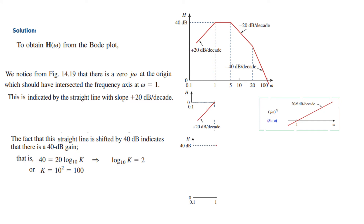The fact that the straight line is shifted up 40 dB indicates a 40 dB gain. Converting: 40 dB means 20 log(K), so log₁₀(K) = 2, giving K = 100. For this part of the transfer function, we get a gain of 100 multiplied by jω, since the zero at the origin is represented by jω.